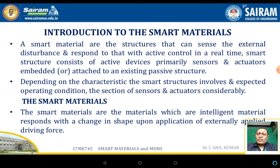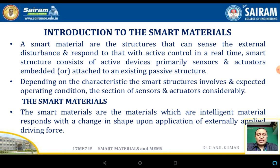A smart material must sense the external disturbance and immediately respond through active control in real time. For example, the human body itself acts as a smart material: when you touch a hot object, the temperature effect is sensed, passed to the brain through the neural network, and feedback is sent back to the hand to withdraw it. This reflex action is essentially a closed-loop system, which falls under the category of smart materials.